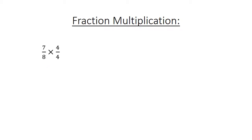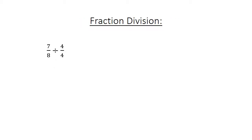Fraction multiplication: 7 over 8 times 4 over 4 equals 28 over 32. Simplify to 7 over 8. Fraction division: 7 over 8 divided by 4 over 4 equals 7 over 8 times 4 over 4 equals 28 over 32 equals 7 over 8.